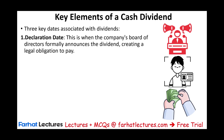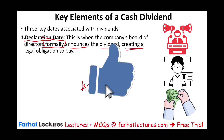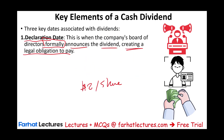The first date is the declaration date. This is when the company's board of directors formally announces the dividend. They will say, for example, 'We declared we will pay a dividend of $2 per share for each shareholder.' Once they make this announcement, they create a legal obligation to pay. Simply put, the company will have to record a liability.